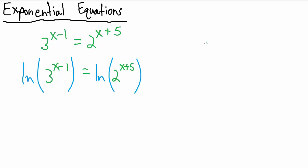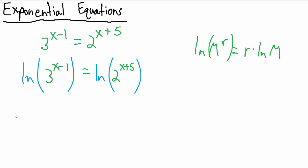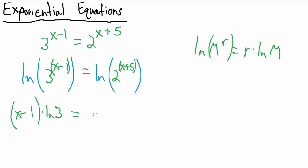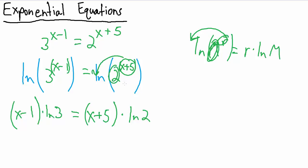Now we're going to use the power rule for logs, which says natural log of m to the r equals r times the natural log of m. So I can take out the x minus 1 and multiply by the natural log — giving us x minus 1 times the natural log of 3. I have to put parentheses around x minus 1 because the entire exponent is being multiplied by the natural log of 3. On the right hand side, similarly, x plus 5 comes out as a factor giving x plus 5 times the natural log of 2.